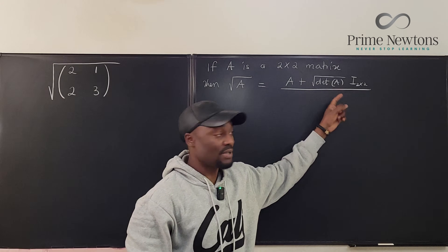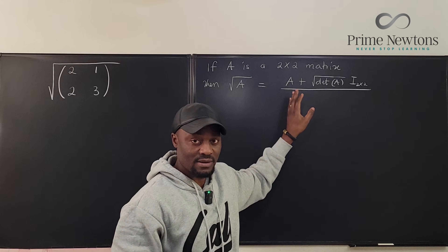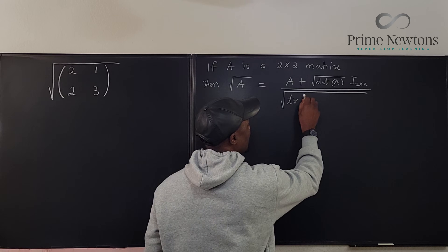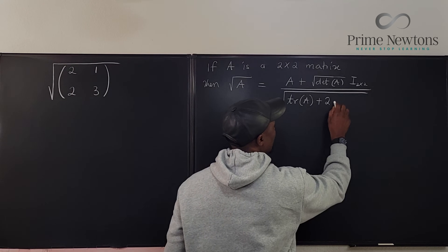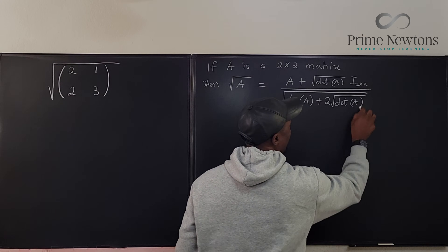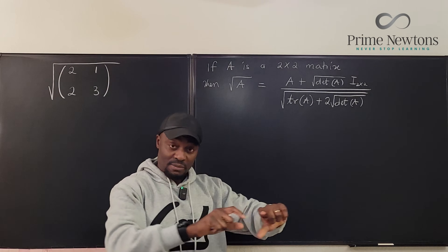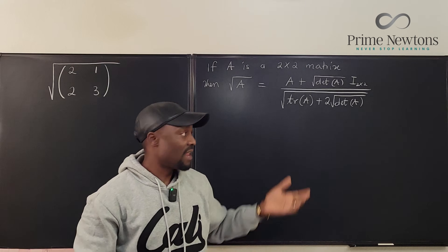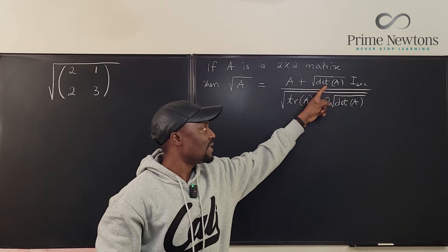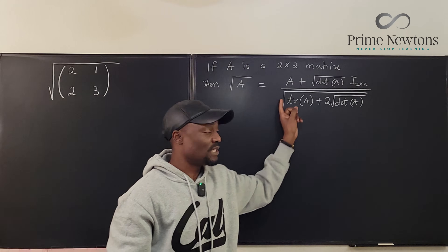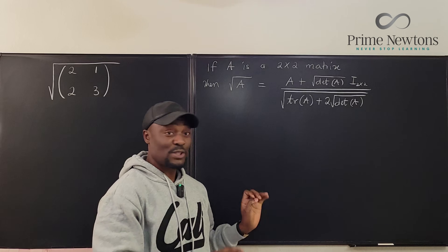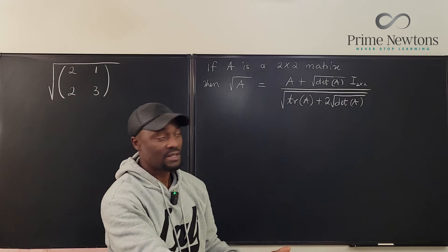This is the sum of two matrices — a number times a matrix gives you a matrix — and then you divide by a number. That denominator is the square root of the trace of A plus 2 times the square root of the determinant of A. This comes from a simple equation where we isolate the square root of A. Try to memorize this formula.